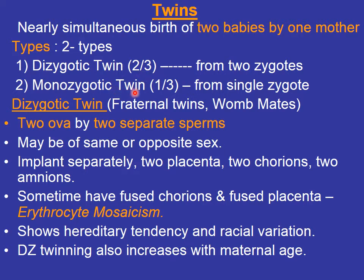The second type is monozygotic twins, which account for one-third of total twin pregnancies — the development of two or more babies from a single zygote. Dizygotic twins, also called fraternal twins, involve fertilization of two ova by two separate sperm, so the developing babies may be of the same or opposite sex and resemble each other like brothers and sisters of the same family.